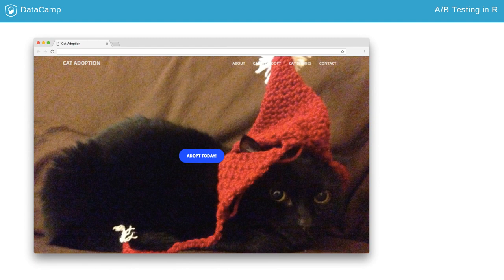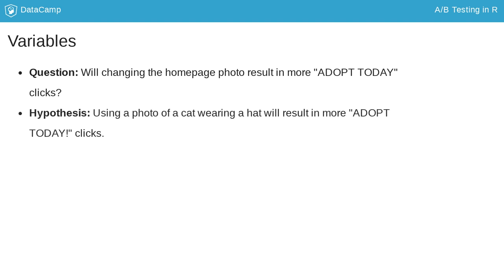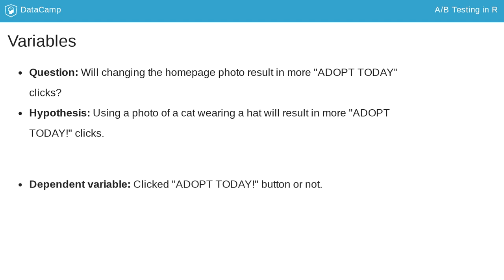For your test photo, you decide to use this photo. Your hypothesis is that seeing a cat in a hat will make people more likely to want to adopt. You have your question: will changing the homepage photo result in more Adopt Today clicks? And your hypothesis: using a photo of a cat wearing a hat will result in more Adopt Today clicks. You also have your dependent variable — whether a person clicked the Adopt Today button or not — and your independent variable, the homepage photo: either the control photo (no hat) or the test photo (hat). By building up from question to independent variable, we know exactly what we're asking, and we can already see the shape of our experiment for how to answer our question.